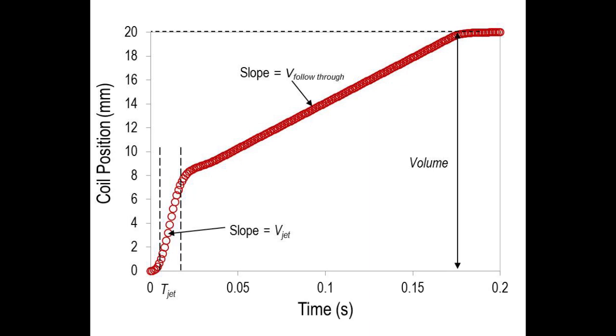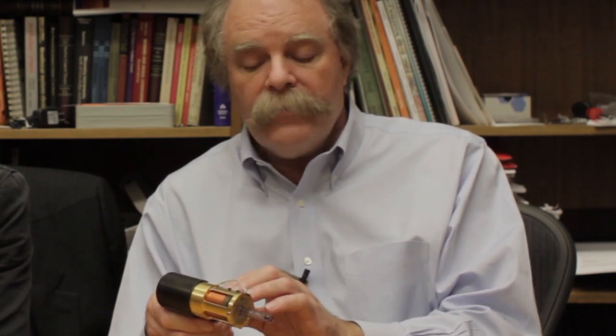So the drug comes out at this fine jet, about the same diameter as a mosquito proboscis. And as many of you know, you don't feel when the mosquito inserts its proboscis into your skin because it's so very narrow. Our jet is of a similar diameter.